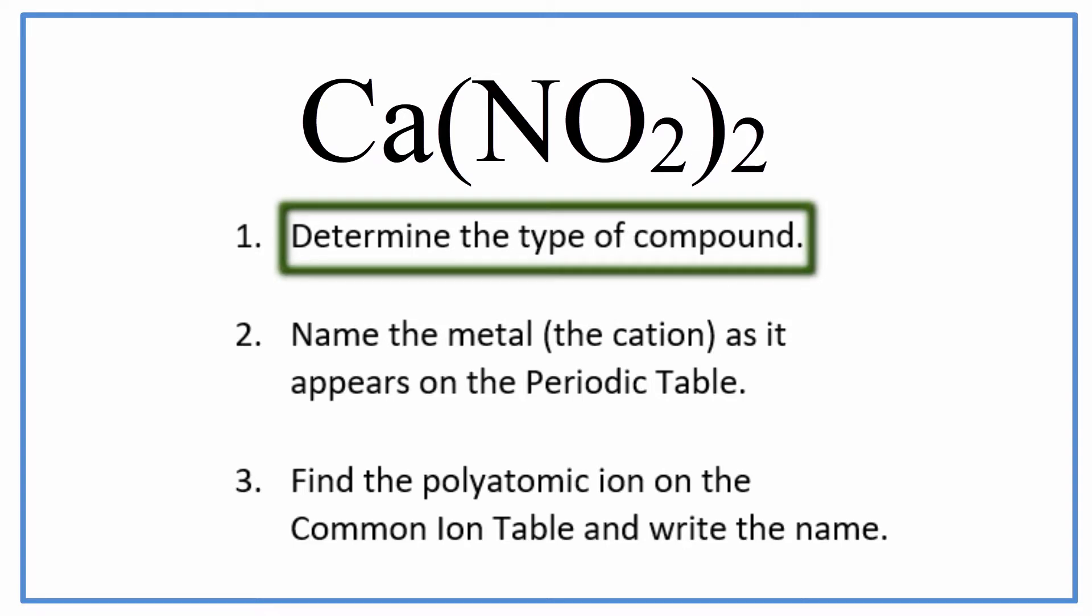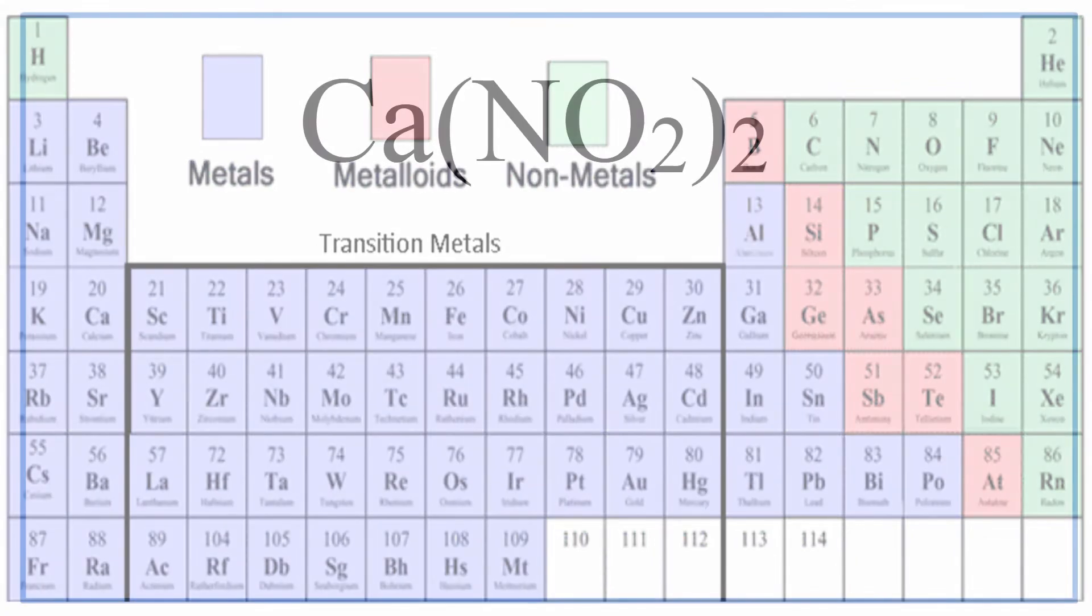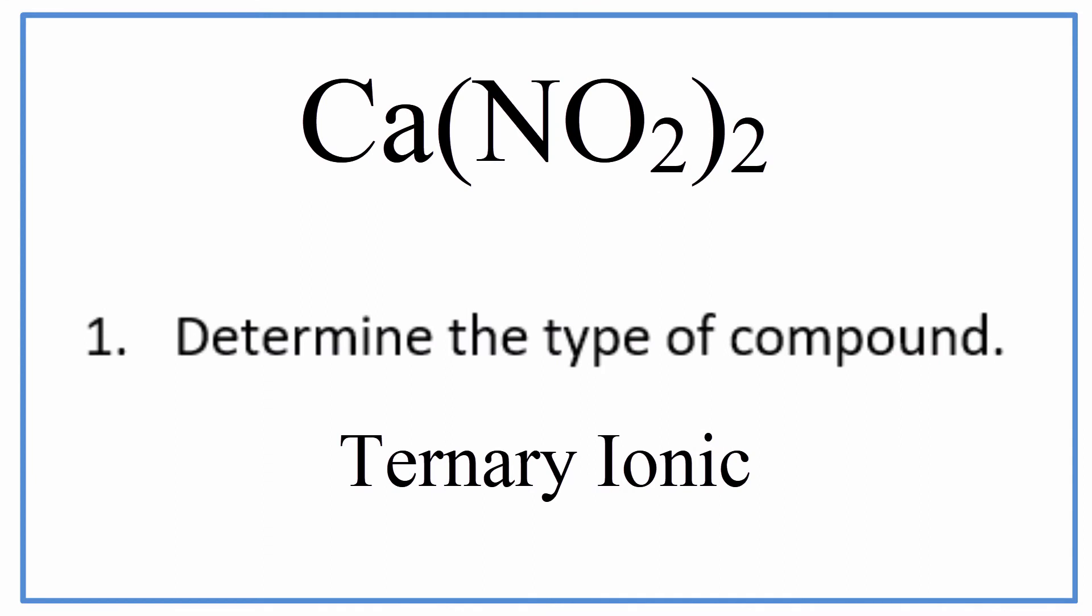First, we need to be sure of the type of compound. On the periodic table, we can see that calcium, that's a metal, and then we have the NO2. And we need to recognize that this is a group of non-metals. It's a polyatomic ion. So that makes this a ternary ionic compound. And since calcium is not a transition metal, we don't really need to worry about Roman numerals here.